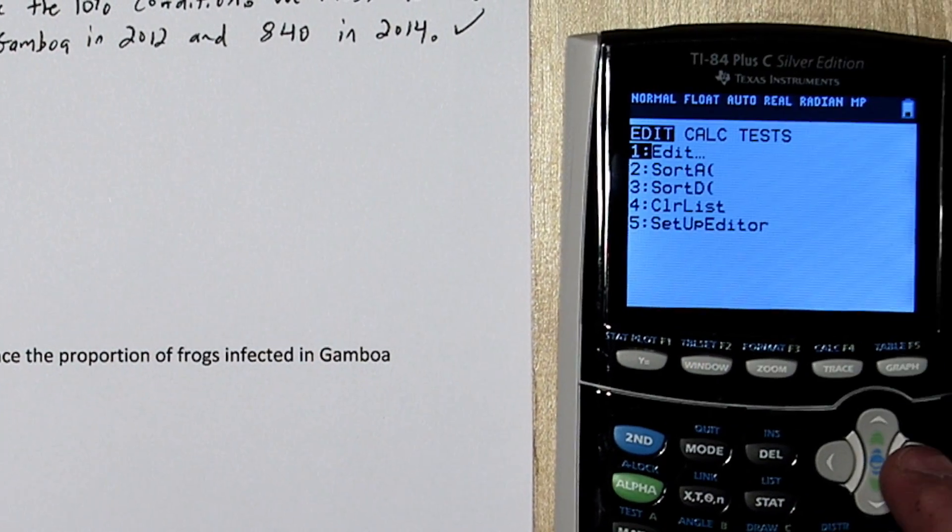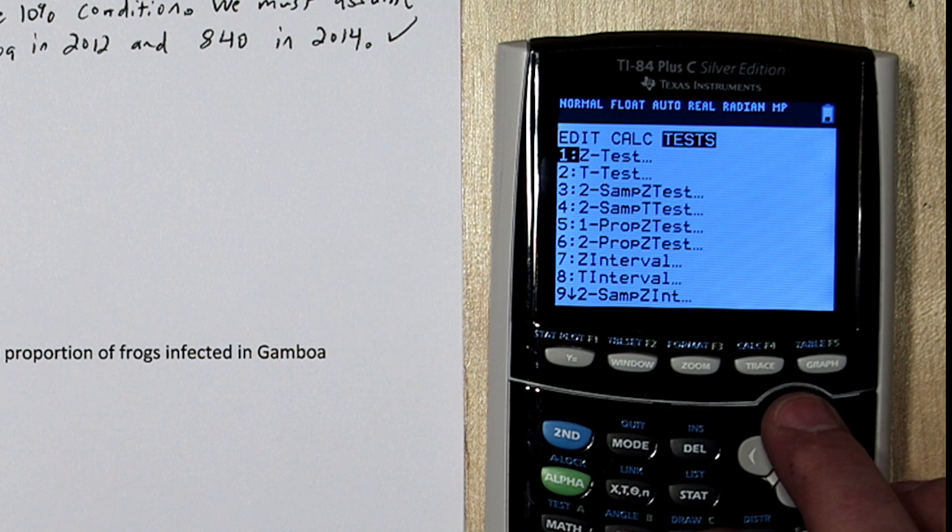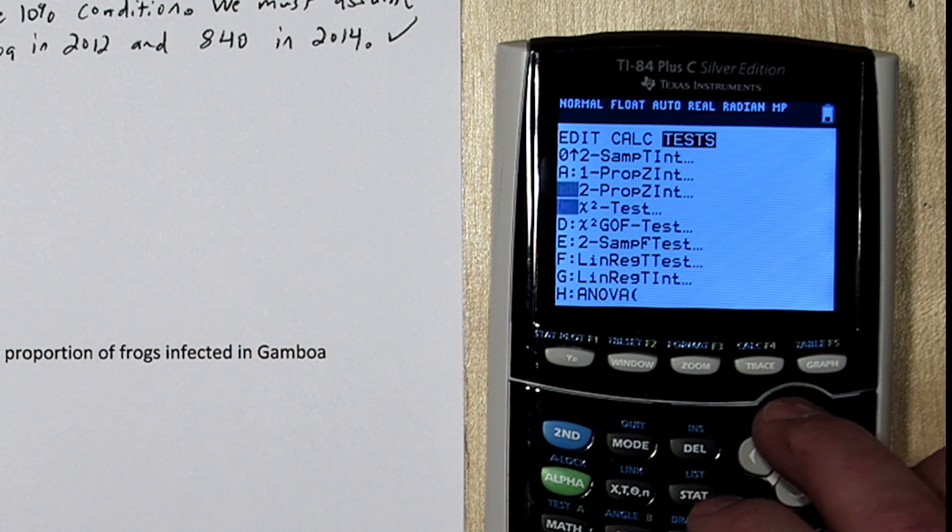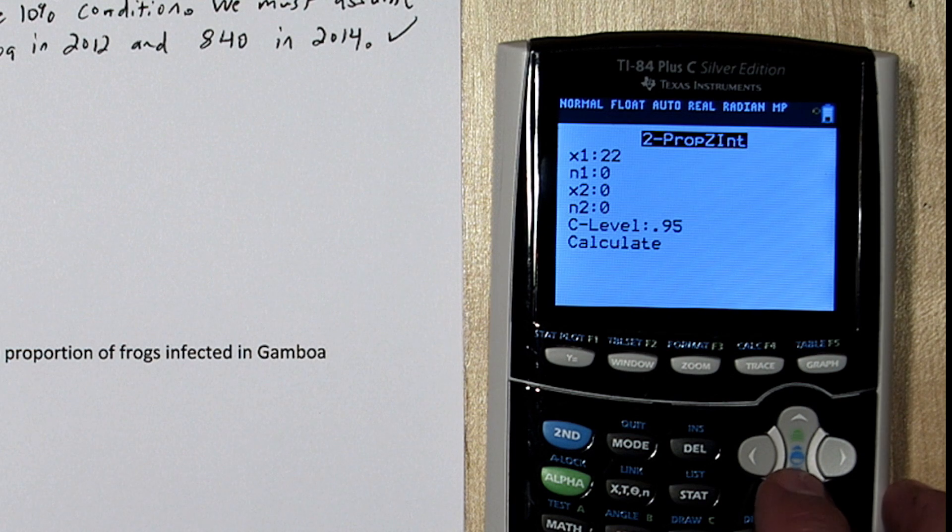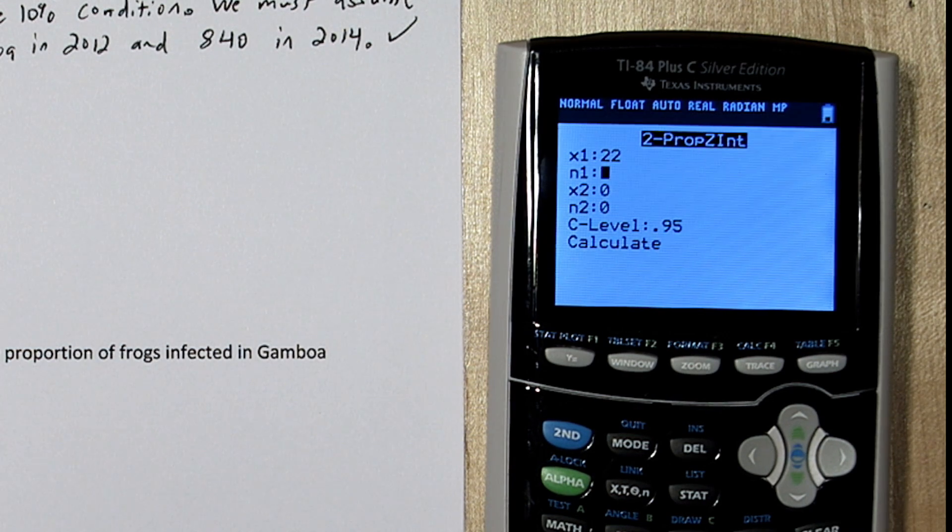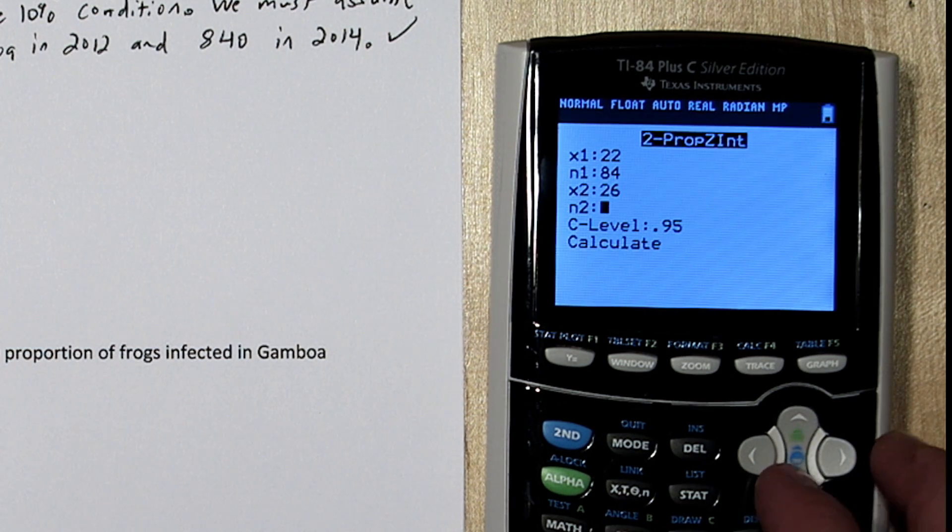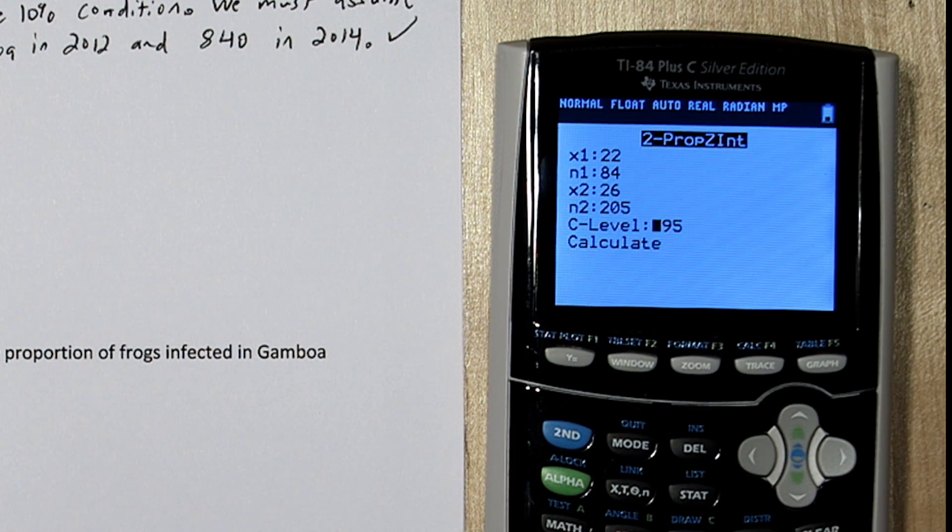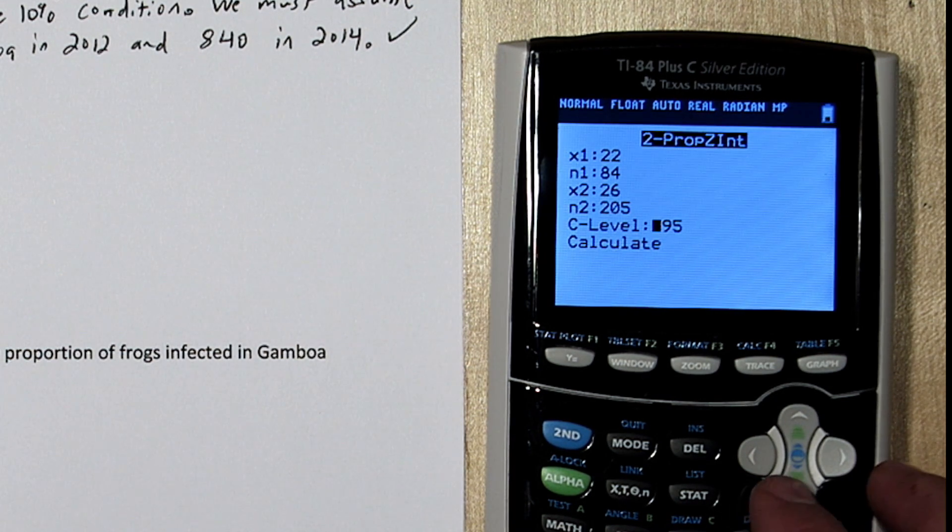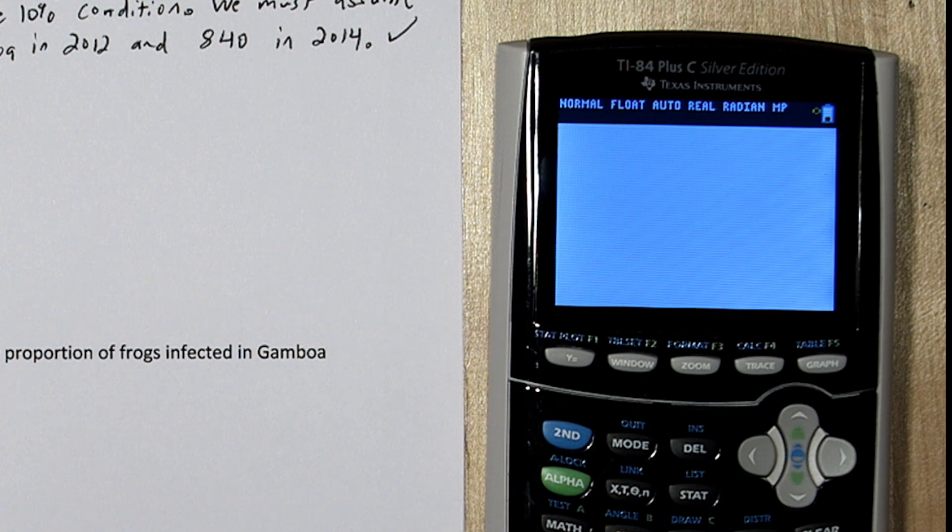We're going to use technology for this calculation. Press STAT and go over to test. Near the bottom is 2 prop z interval. For x1, how many frogs did we have infected in 2014? 22. And how many frogs were sampled in 2014? 84. For x2, we had 26 infections in 2012 out of a total of 205 frogs. Now we can put our confidence level, 95, and push calculate.